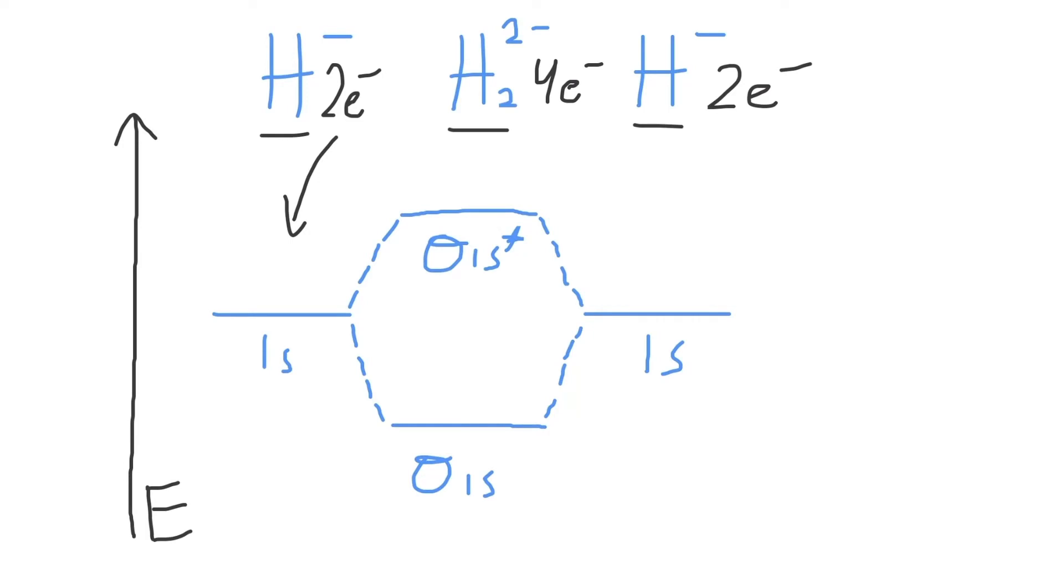These four electrons will fill in the 1s atomic orbitals, two electrons for each hydrogen atom.